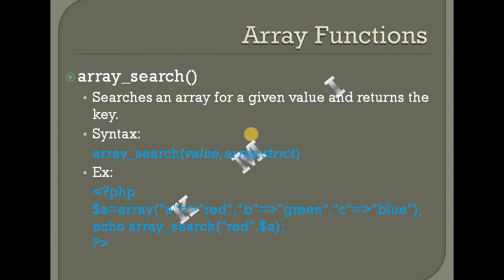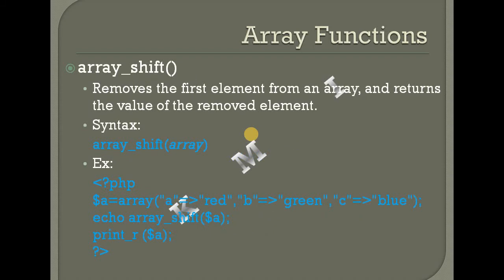Array_search — search an array for a given value and returns the key. Then array_shift — removes the first element from an array and returns the value of the removed element. First element is removed.